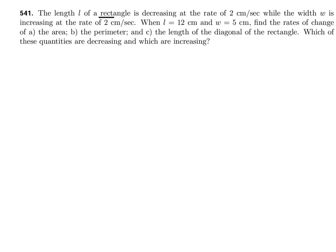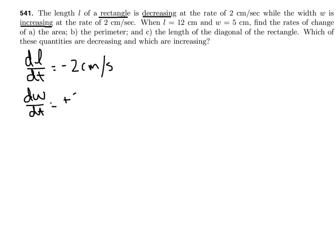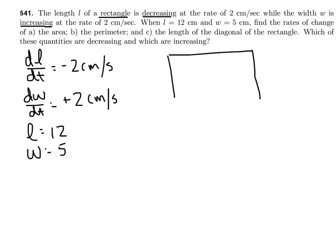We've got a well-behaved rectangle here. The length is decreasing at a rate of 2 centimeters per second while the width is increasing at a rate of 2 centimeters per second. So dL/dt = −2 cm/s and dW/dt = +2 cm/s. At the moment when the length is 12 and the width is 5 — that's when we hit the pause button. It's a three-part problem: we'll find the rate at which the area, perimeter, and diagonal are changing.